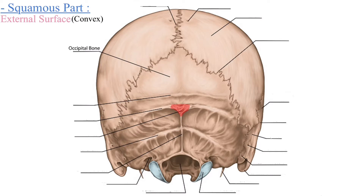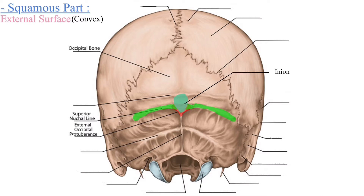In the center of the external surface, there is a protuberance called the external occipital protuberance. The highest point of the external occipital protuberance is called the inion, which is present in the midline of the body. From the inion, two arc lines run from the medial side to the lateral side, and these are called the superior nuchal line.